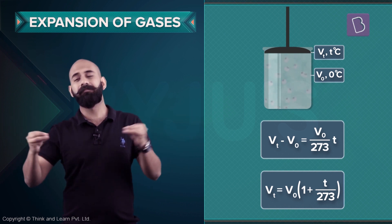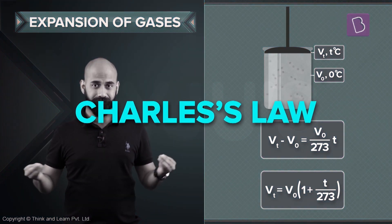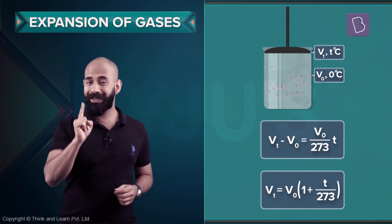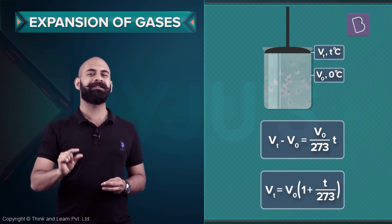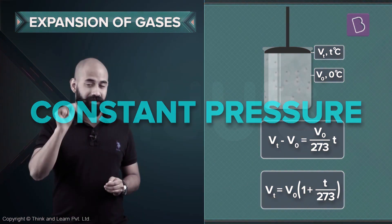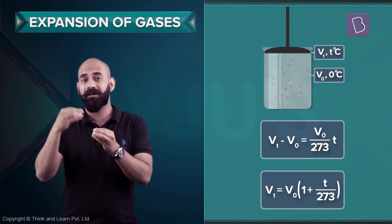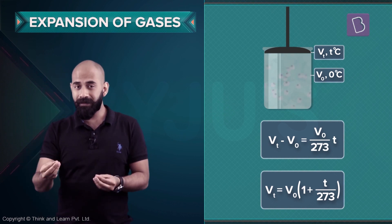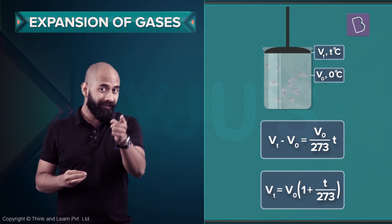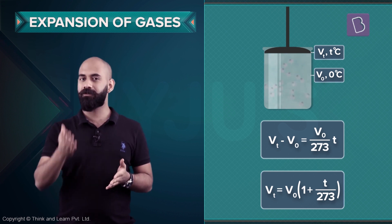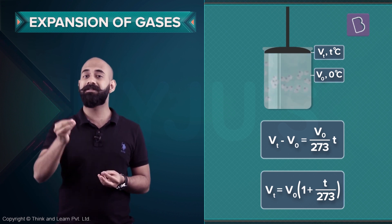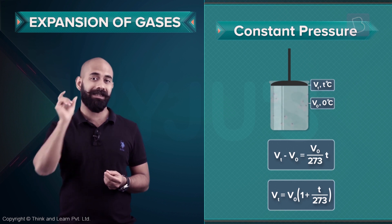One thing that we have to keep in mind is that all this is done at constant pressure. Charles' Law is for gases that are expanding at constant pressure. So even the example with VT and V₀ — all this should be done at constant pressure, and this expression is valid only when the whole process takes place at constant pressure.